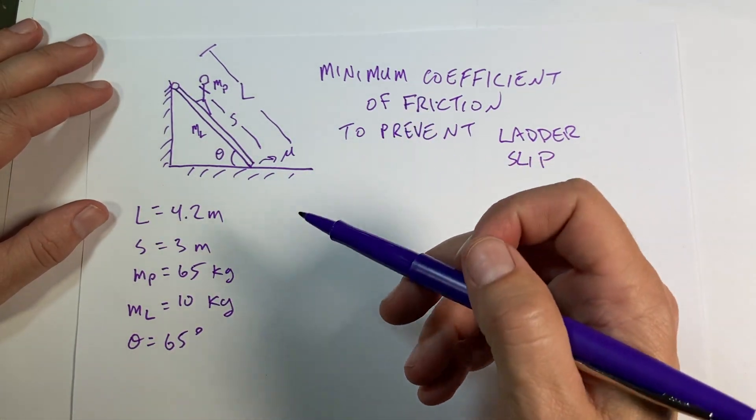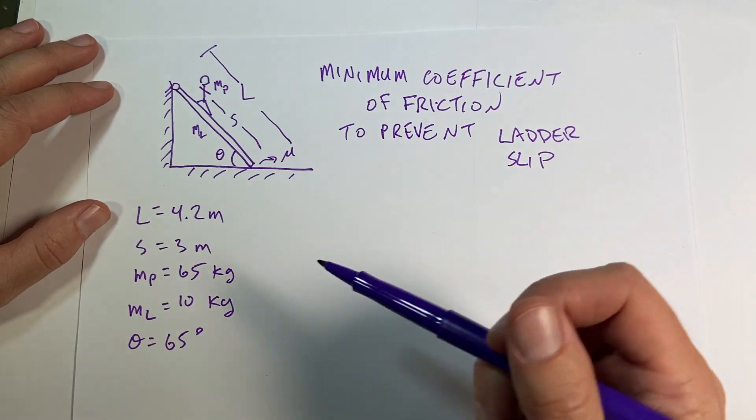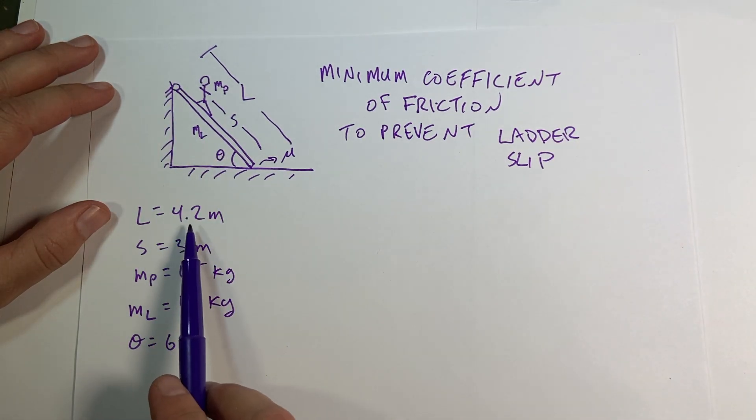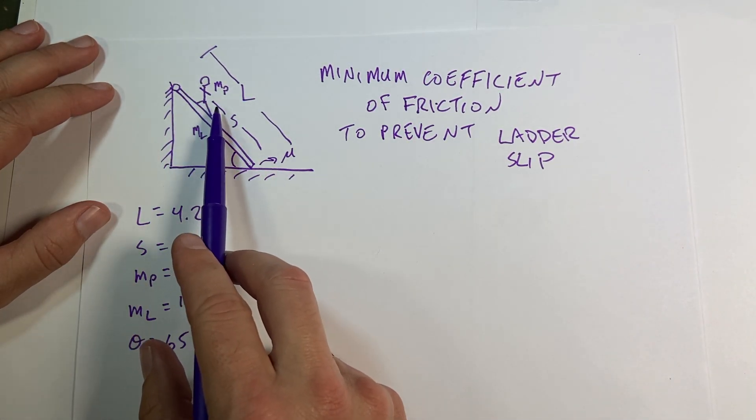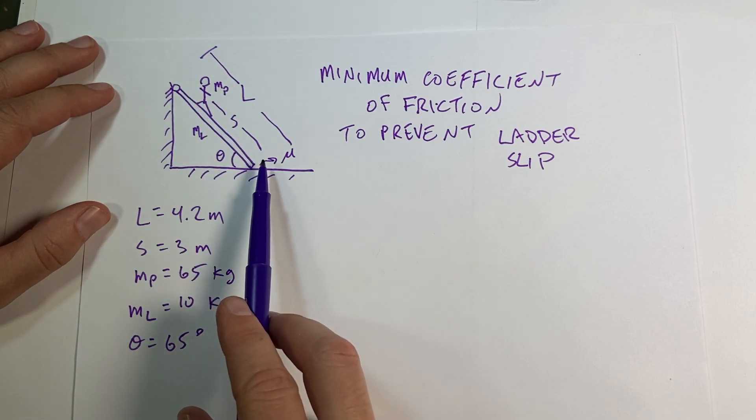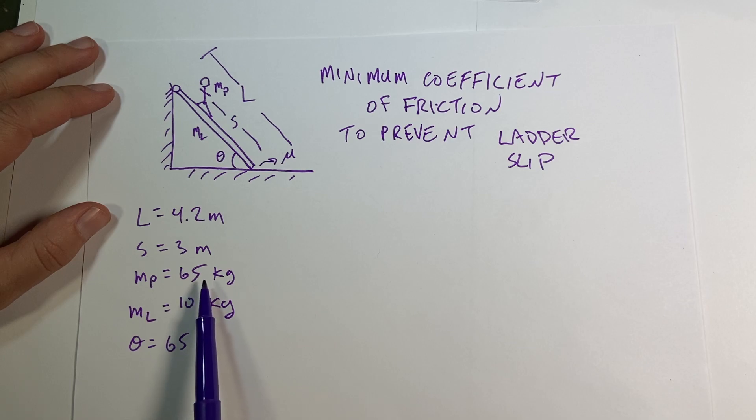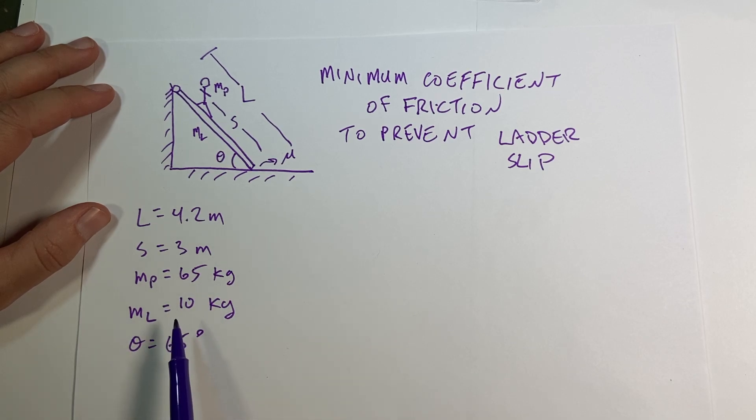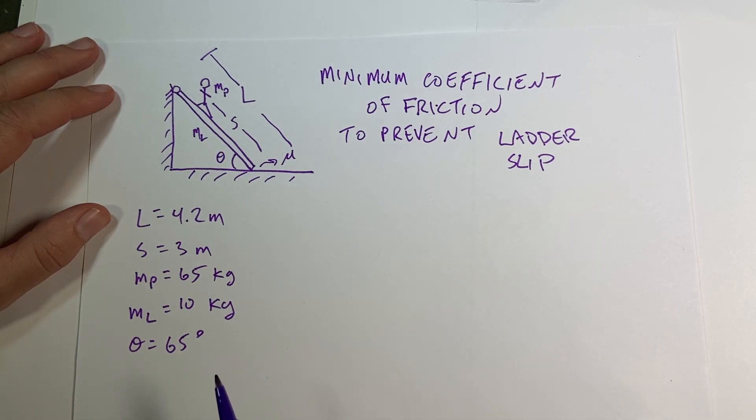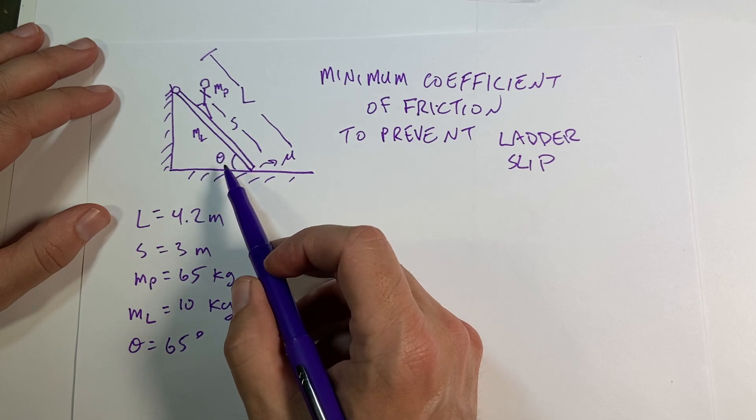So I picked some values here just because I know everyone likes numbers. So I have the length of the ladder, 4.2 meters. The distance up the ladder, S, is 3 meters. The mass of the person, 65 kilograms. The mass of the ladder, 10 kilograms. I know it's a heavy ladder, but just indulge me, please. Please indulge me. And then this angle right here is 65 degrees.